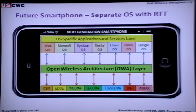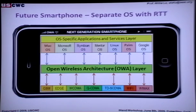In the future, when the user changes wireless standards, you don't have to change the device — just change the parameters. We can put the parameters in an external memory card or SIM card. Then the user, by just changing the SIM card, can change the OS and change the standards. That's basically the OWA layer.